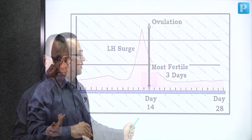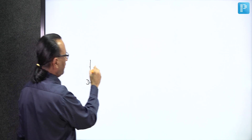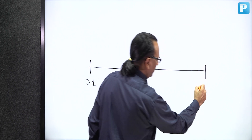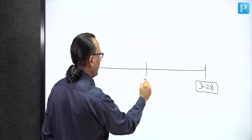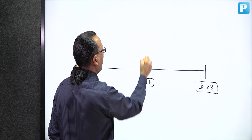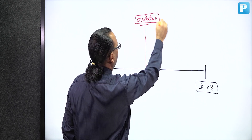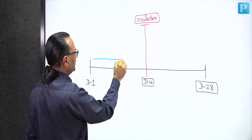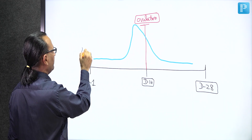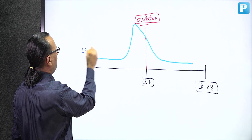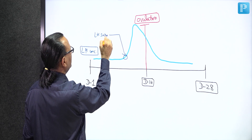Now we draw the graph ourselves. Here is day one of the cycle, and since this lady has a 28-day cycle, going back 14 days gives us the midcycle — the day of ovulation. Plotting the concentration of LH hormone on the graph, we can show the LH hormone taking a surge before ovulation, reaching a peak, and then going down again. We can add details in terms of hours.